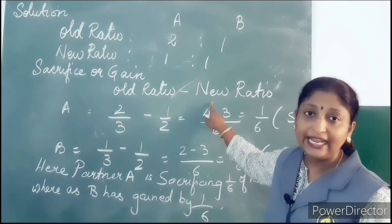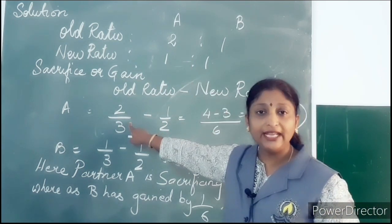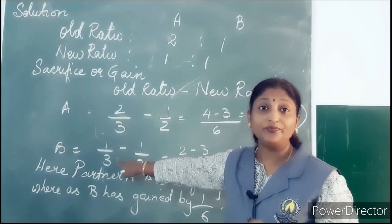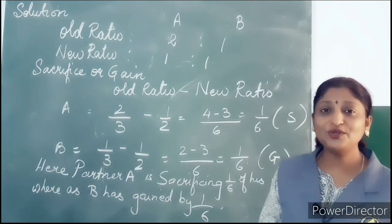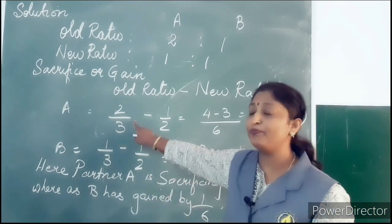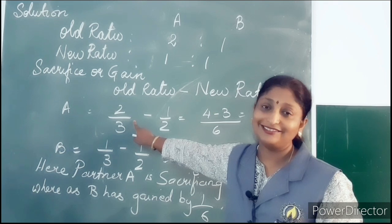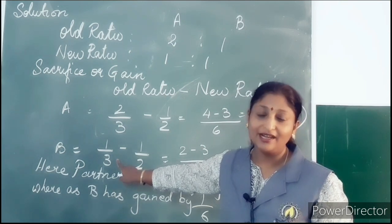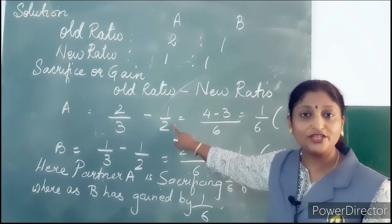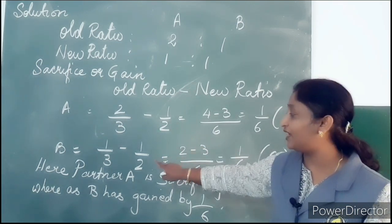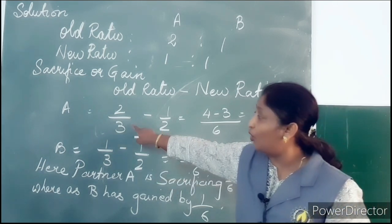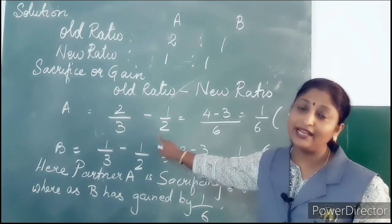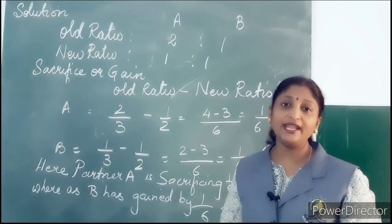The formula for sacrificing ratio is old ratio minus new ratio. The old ratio of partner A is 2 by 3, and the old ratio of partner B is 1 by 3. The new ratio of A is 1 by 2, and the new ratio of B is 1 by 2. So we apply old ratio minus new ratio, and we shall take the LCM of 3 and 2, which is 6.